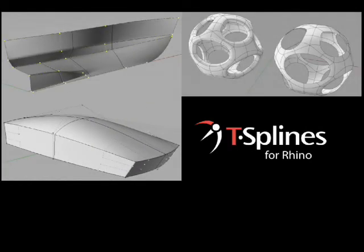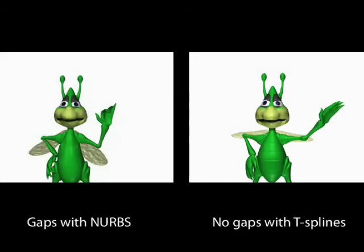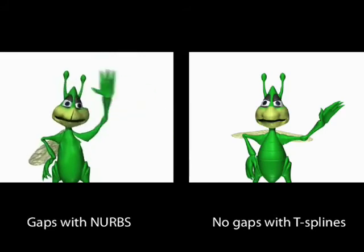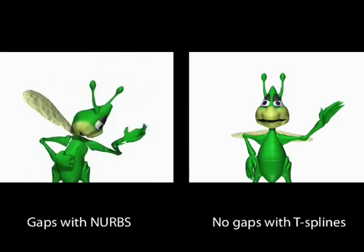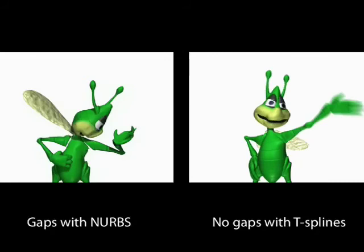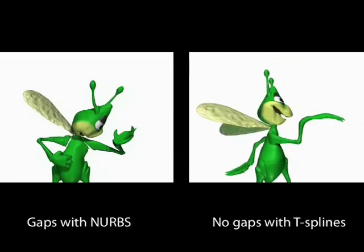These special attributes make it possible to quickly edit T-Splines. This example shows why it is easier to edit organic designs in T-Splines than in NURBS. The NURBS bug looks good in one position, but once his control points are moved, it becomes obvious that he is made of many NURBS patches and gaps appear. The T-Splines bug is a single, watertight surface, so control points can be moved in any direction without the surface tearing.